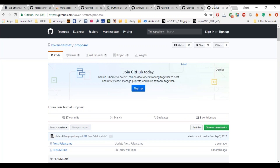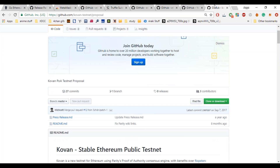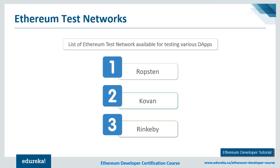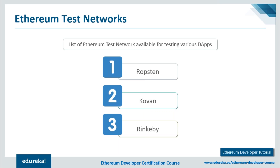To test our decentralized application on an Ethereum network, there are test networks available: the Ropsten network, Kovan network, and Rinkeby test network. Ropsten reproduces the current production environment — system and network conditions on the live Ethereum mainnet. It can be used with both Geth and Parity. Ether can be mined or requested from the MetaMask faucet or Ropsten faucet. Kovan uses proof of authority, doesn't support Geth, and ether must be requested from the faucet. You can also create a custom network from your local development host using MetaMask.